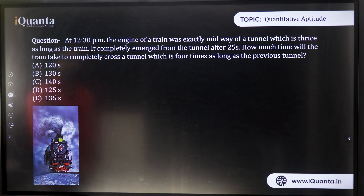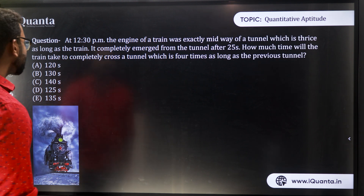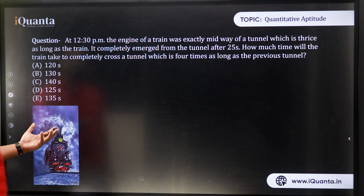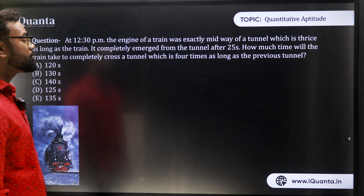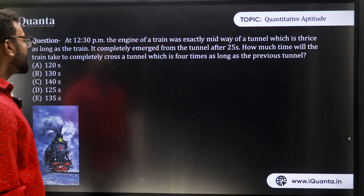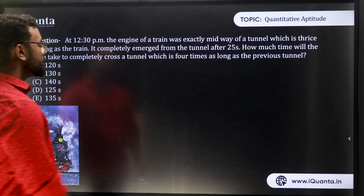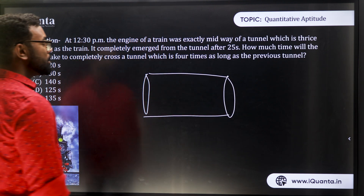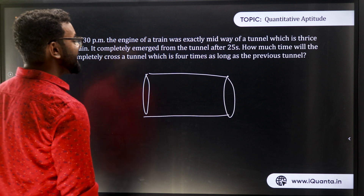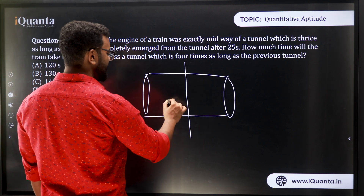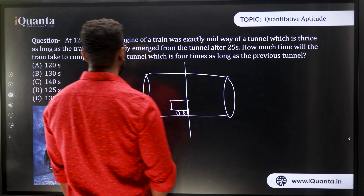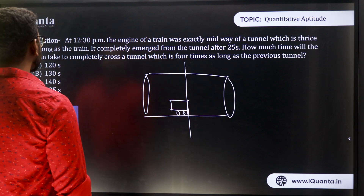Let's look at the next question. At 12:30 pm, the engine of a train was exactly midway of a tunnel, which is thrice as long as the train. It completely emerged from the tunnel after 25 seconds. How much time will the train take to completely cross a tunnel which is 4 times as long as the previous tunnel? Let's draw the tunnel. The engine is at the midpoint. The tunnel is thrice as long as the train.